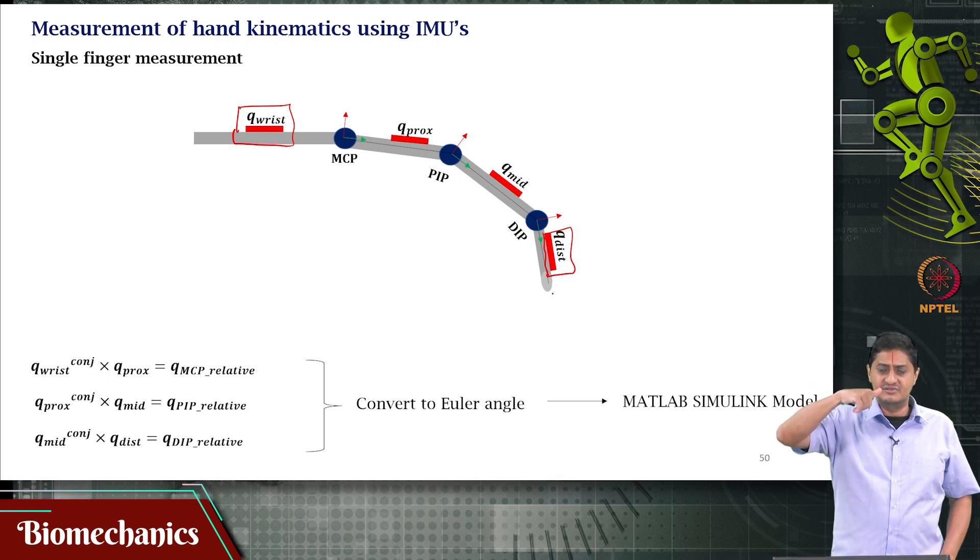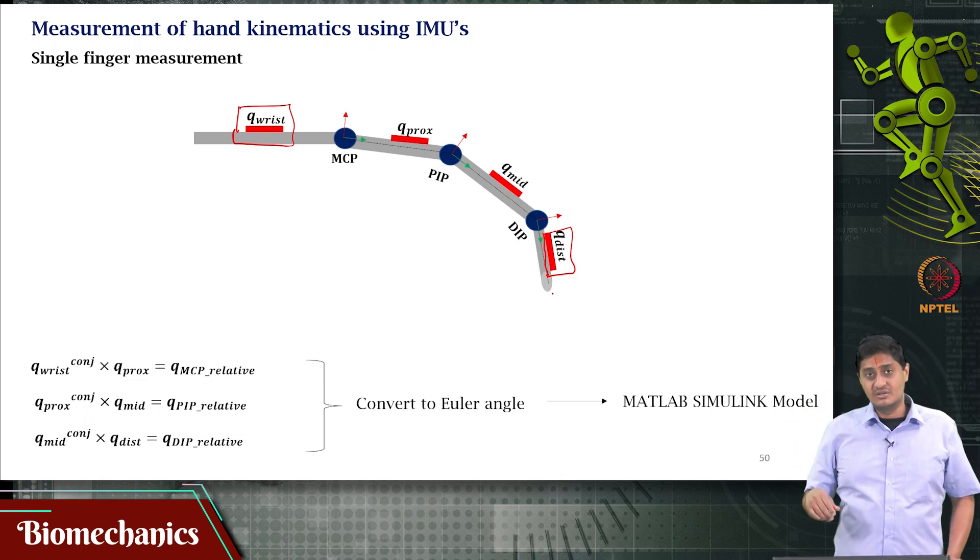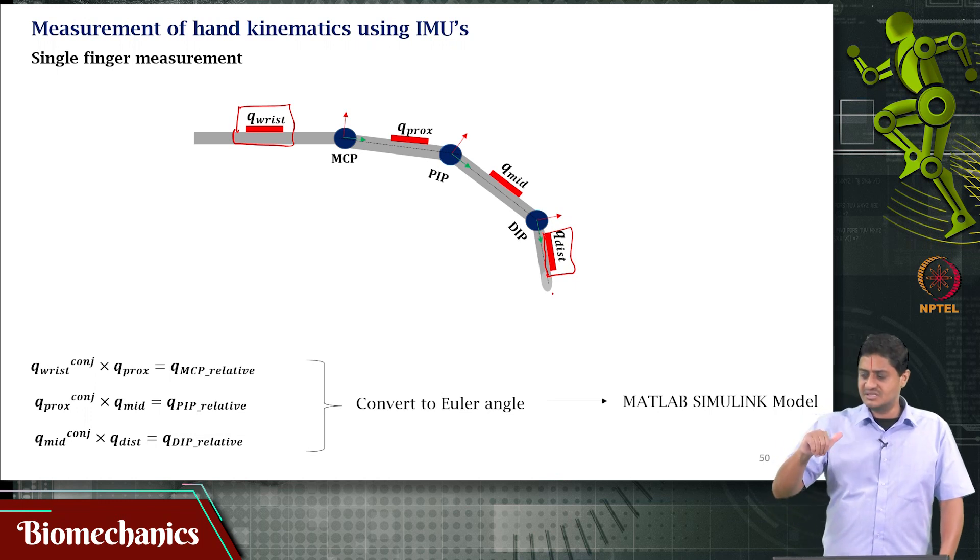I can close my hand like this. When I do that, the distal phalanx may even cross 180 degrees. The constraints on the angular measurements will not be met.